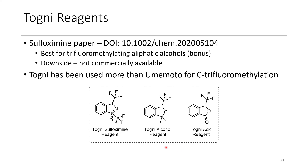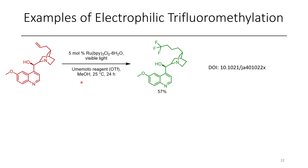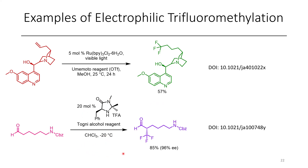For C-trifluoromethylation, the alcohol or acid Togni reagent is most commonly used, especially since the sulfoxime reagent is very new. Examples of Umemoto reagent for C-CF3 formation include a report by Gouverneur and co-workers using photocatalytic conditions to add CF3 groups to alkenes, where the terminal position was typically observed, though the more sterically accessible site was generally favored. From the MacMillan group, alpha-trifluoromethylation of aldehydes was demonstrated in an enantioselective manner using one of the MacMillan imidazolidinone catalysts in the presence of the Togni reagent alcohol derivative.